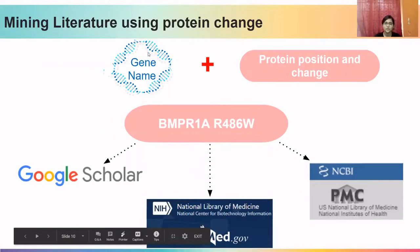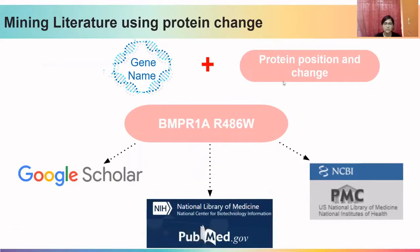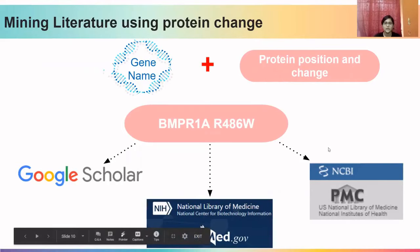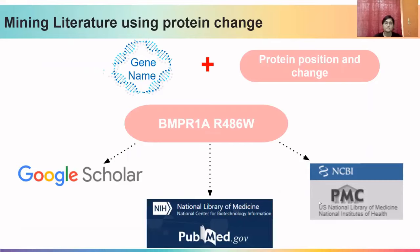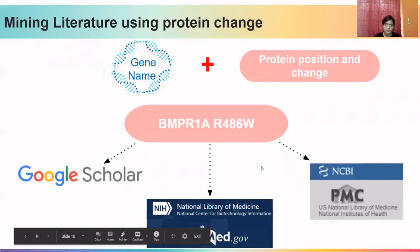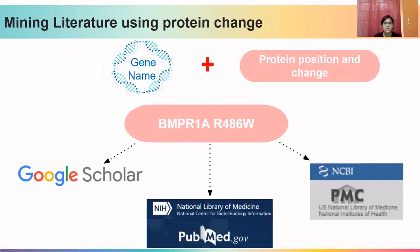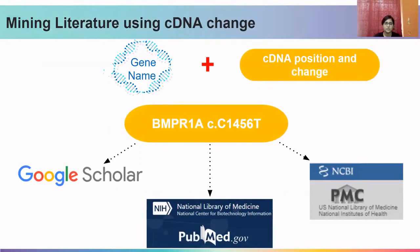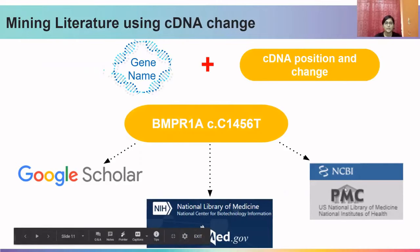The first step after VEP annotation is to take the gene name and protein position and search in Google Scholar, PubMed, and PMC to retrieve the maximum number of publications, then read through each to determine relevance. The next step is to use the gene name along with the cDNA position, since variants are sometimes reported only in cDNA format without protein changes. Just as we did for the protein change, we mine Google Scholar, PubMed, and PMC.